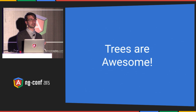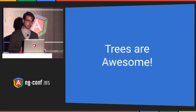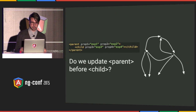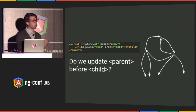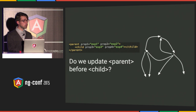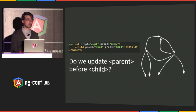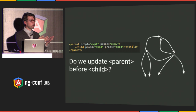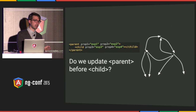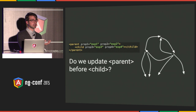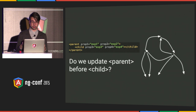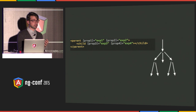Trees also provide nice guarantees, and in my view they have a profound impact on the dev experience. In Angular 1, because of the cycles, it's hard to know what gets updated when. In this example with two directives — parent and child — each with two bindings, the updates can be interleaved. You cannot know how many times a particular property is checked; it can be zero, one, or many, because of the cycles.